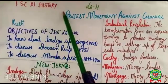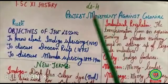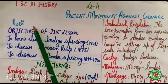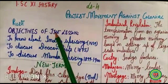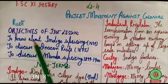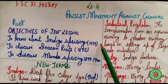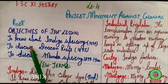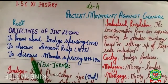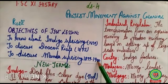Welcome to ISE Plus One History class. We are going to start Lesson 4 today: Protest Movements Against Colonial Rule. The objectives are to know about the Indigo Uprising of 1859, to discuss the Deccan Riots of 1875, and to discuss the Munda Uprising of 1899 to 1900.